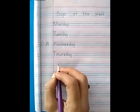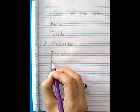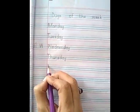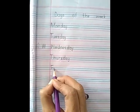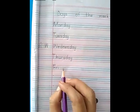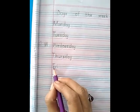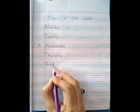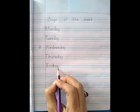Now what is the next day? Friday. Hold your pencil on this dot. Make F. F-R-I, fry. Always read the spelling when you are writing. D-A-Y, day. Friday.